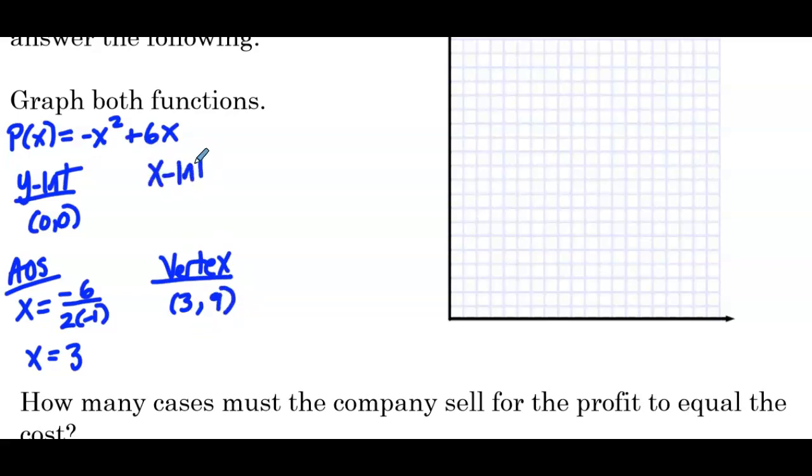Now we also need our x-intercepts. So negative x squared plus 6x equals 0. We can factor out a negative x. That leaves us with x minus 6 equals 0. So if negative x equals 0, that means x equals 0. If x minus 6 equals 0, that means x equals 6. I'm skipping a step here, but I'm a little tight for room. So we have 0, 0, and 6, 0 as the x-intercepts.